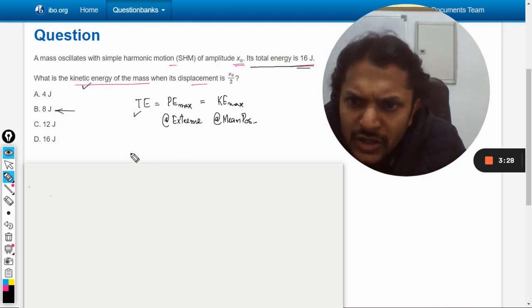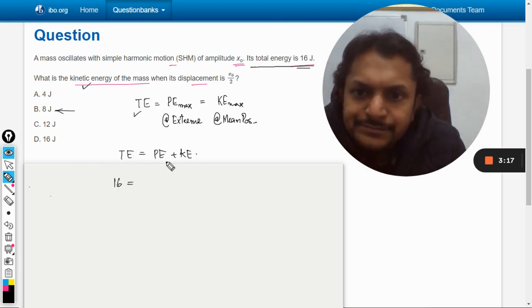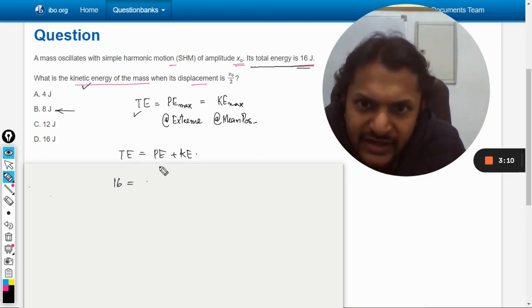So I can say that total energy is equal to potential energy plus kinetic energy at any position. So total energy is given as 16, and at x_naught by 2, what will be the potential energy? So it's easy, we can find it here.